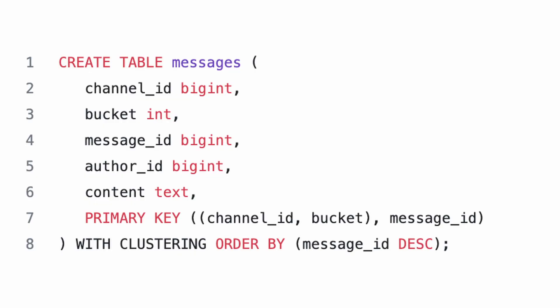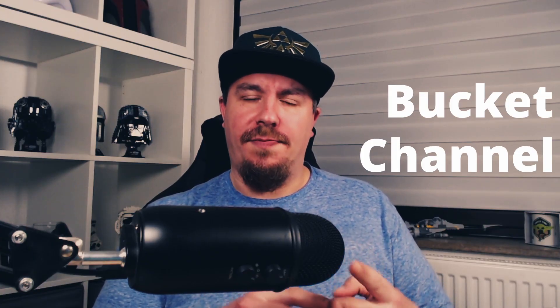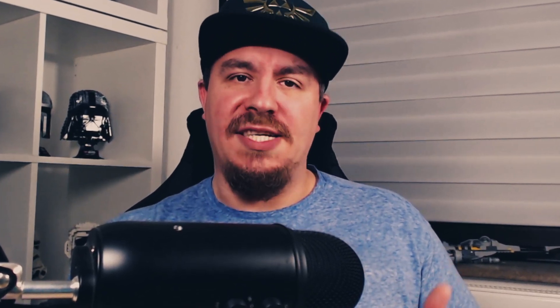The engineers at Discord used a relatively clever technique to partition messages within a cluster. Looking at the schema, a table is created within Cassandra and assigned a primary key that partially defines the partitioning. Messages are partitioned by the channel and a bucket — a static time window. This means that all messages belonging to the same channel are basically stored and replicated together. On one hand, it's easier to fetch messages you've missed since you were last active. On the other hand, large servers with many users tend to put quite some stress on just a few Cassandra nodes.